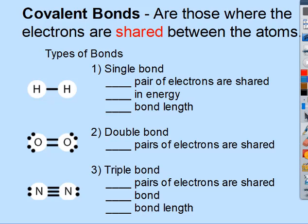Covalent bonds are those where the electrons are shared between the atoms. These typically occur between two nonmetals. There are three types of bonds: single, double, and triple.